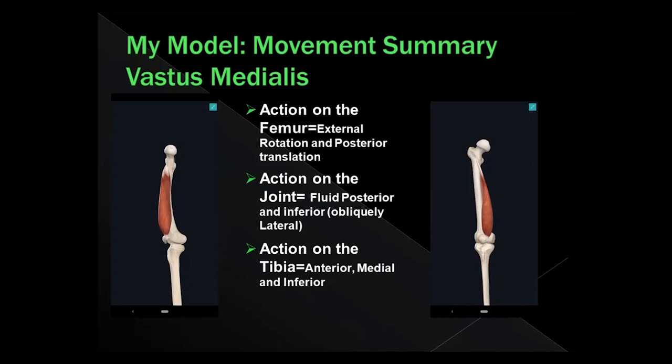So if we take the vastus medialis, for example, if we look at the action on the femur, it's going to externally rotate and posterior translate the femur based on its location. If the muscle is on the inside of the leg, as you can see here, it's going to expand and push it away laterally. But it's also on the front of the femur, so it's going to expand and push it backwards — a posterior-lateral movement of the femur.